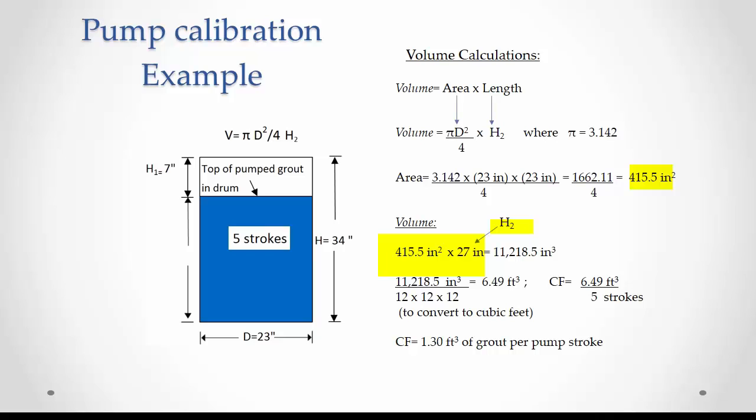This area multiplied by the height H sub 2 of 27 inches is 11,218.5 cubic inches. We divide this by 12 to the cube to obtain cubic feet. This gives us 6.49 cubic feet.